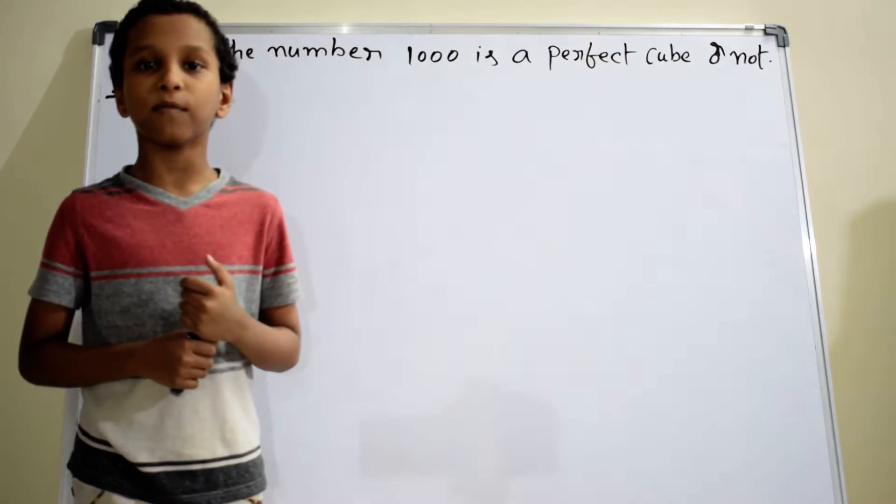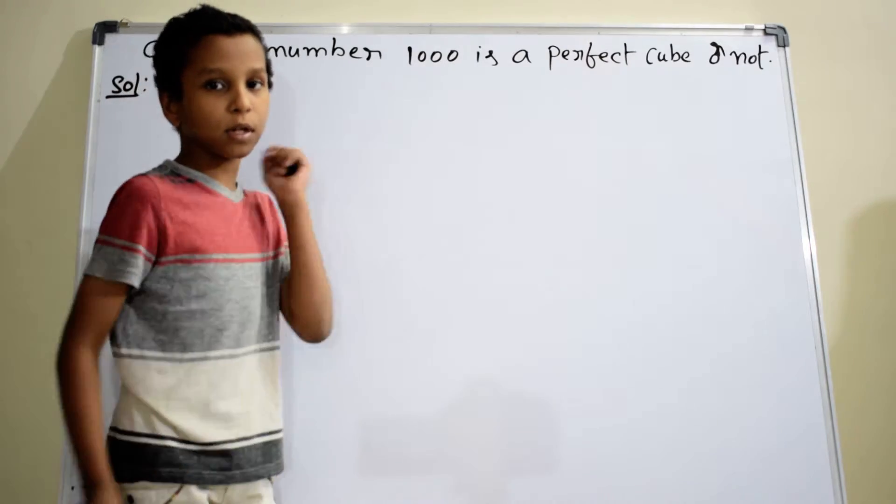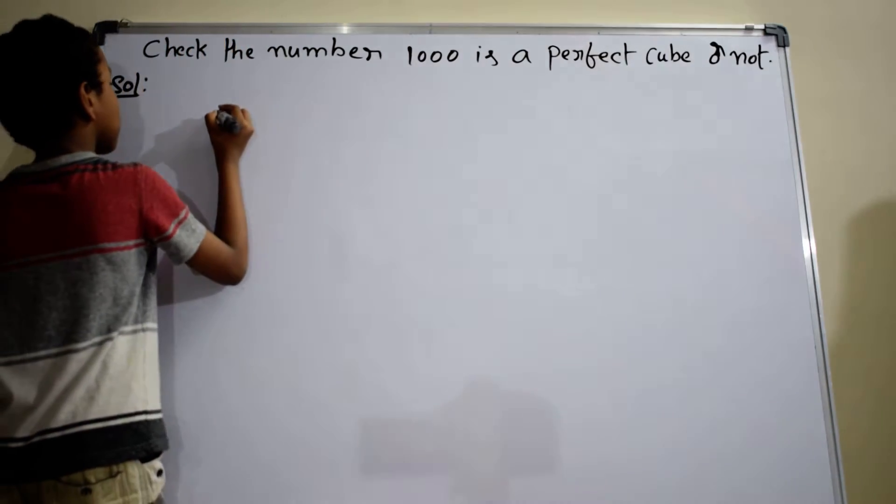So now we will find prime factors by using the division method. Write 1000 here.